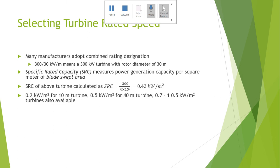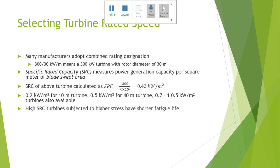Similarly, SRC values range from 0.2 kilowatts per square meter for a 10-meter turbine, 0.5 kilowatts per square meter for a 40-meter turbine, and 0.7 to 10.5 kilowatts per square meter turbines are also widely available in the production market. High SRC turbines are subjected to higher stress and have a shorter fatigue life.